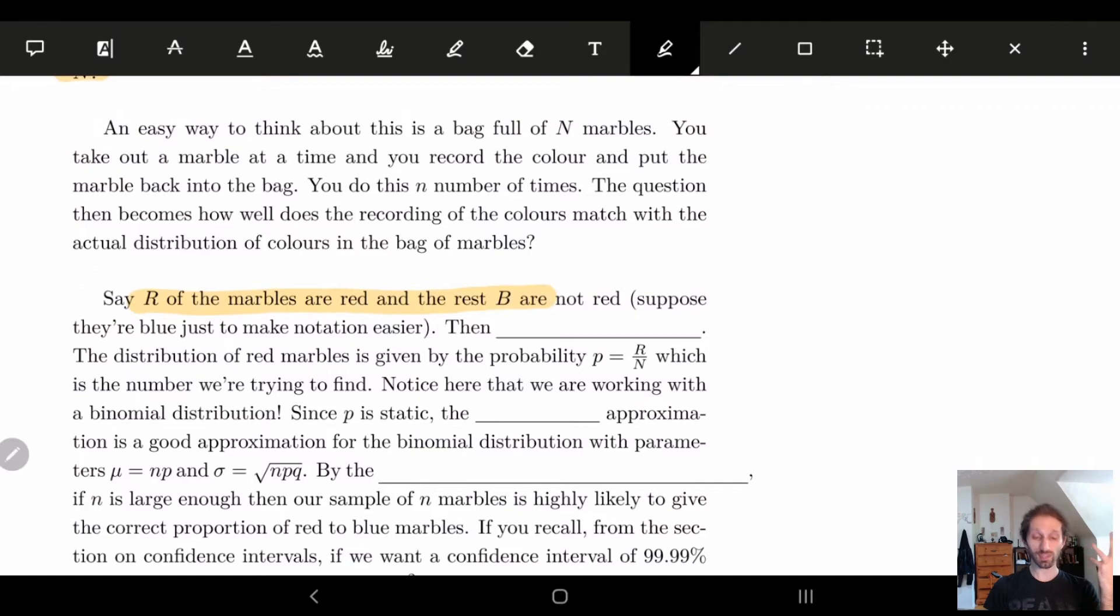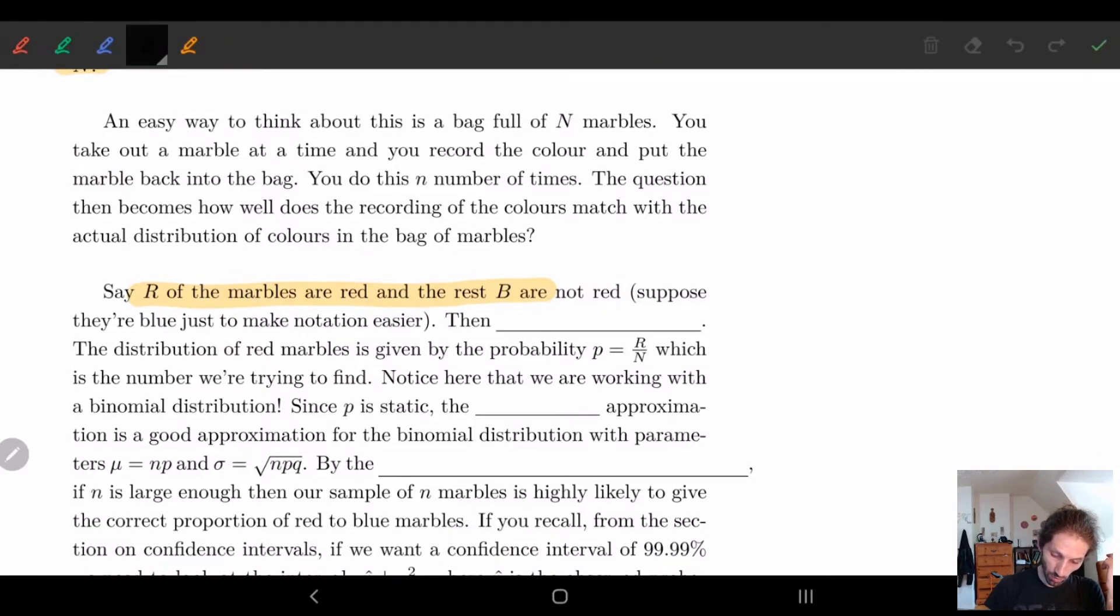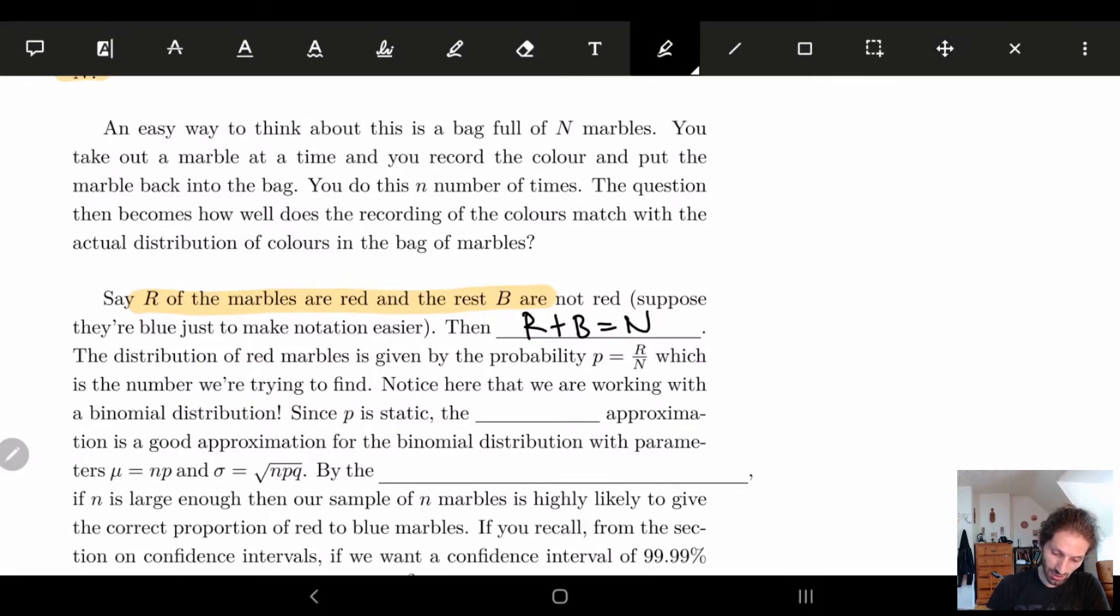Now, one of the things we know is, if I let R be the number of red marbles, and B be the rest of them, so the blue marbles, well, we know that R plus B is equal to big N, right? We kind of already know some information. We know that all the marbles are either red or not, and we have N marbles. And so what we know is, the probability that a marble is red is actually given by this formula, p is equal to R over N. This is the number we're trying to find. We're trying to figure out p.